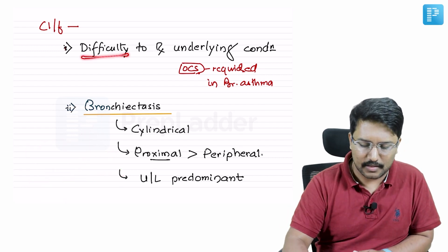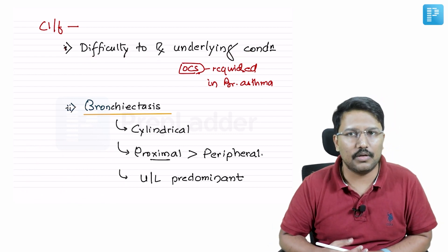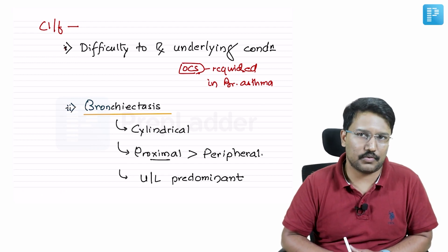The most important thing is when the underlying disease like asthma is becoming increasingly difficult to control, you should keep allergic bronchopulmonary aspergillosis also as one of the important differential diagnoses.